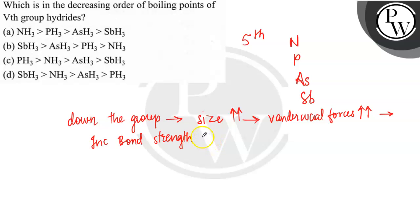With an increase in bond strength, it becomes harder to break them. Therefore, the boiling point should increase down the group.